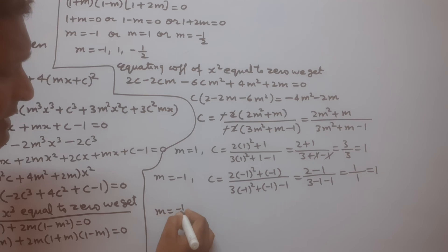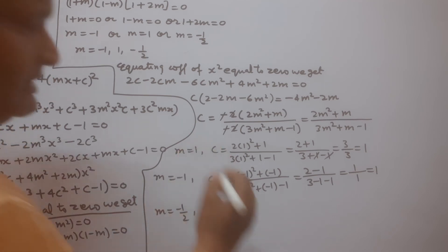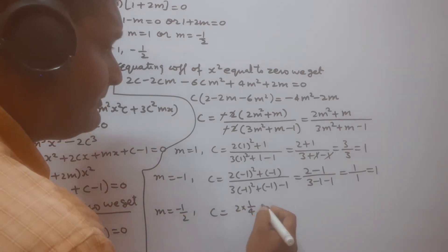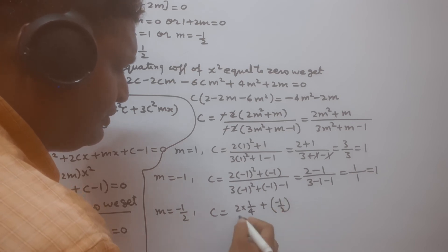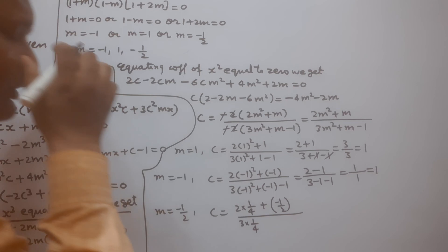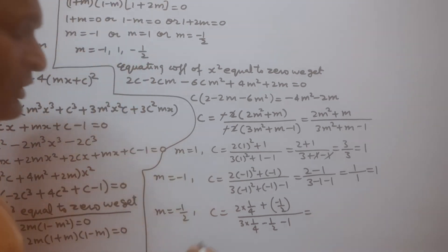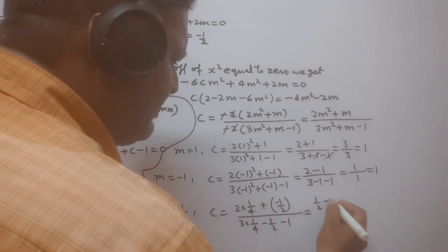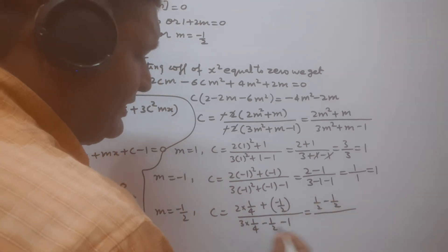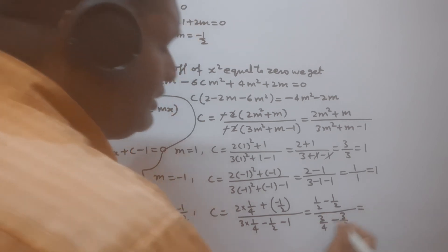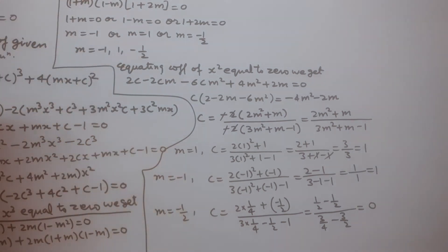For m = −1/2: c = (2(1/4) + (−1/2)) / (3(1/4) + (−1/2) − 1) = (1/2 − 1/2) / (3/4 − 3/2) = 0/(−3/4) = 0. So corresponding to m = −1/2, we get c = 0.